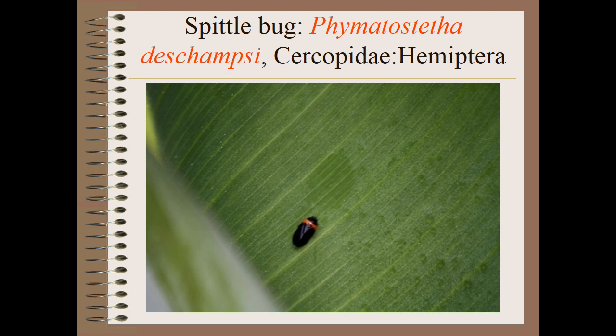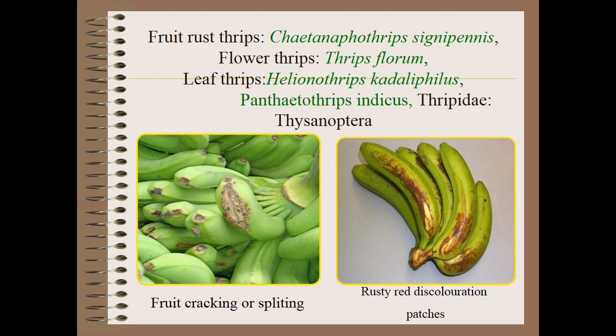Next is the pith bug, Phimastatica deschampsia, family Coreidae, order Hemiptera. Next are thrips species: fruit rust thrips, Chaetanaphothrips signipennis; flower thrips, Thrips florum; leaf thrips, Heliothrips haemorrhoidalis; and Panchaetothrips indicus; family Thripidae, order Thysanoptera. Both nymphs and adults lacerate and suck sap from leaves and fruits, resulting in yellowing of leaves, corky scab formation on fruits, fruit cracking or splitting, and rusty red coloration patches on fruits.